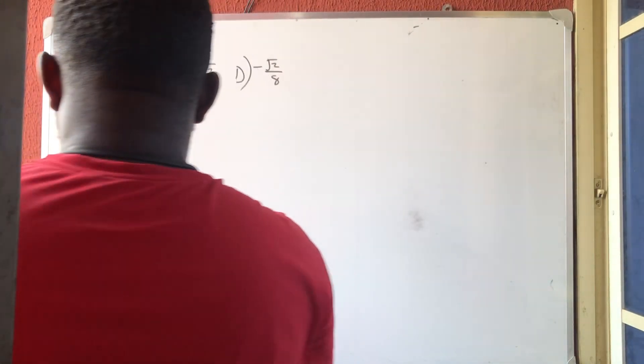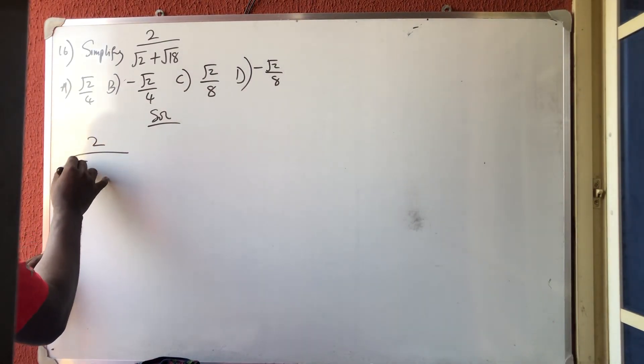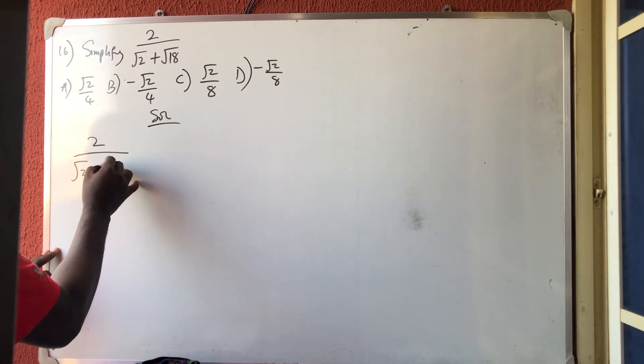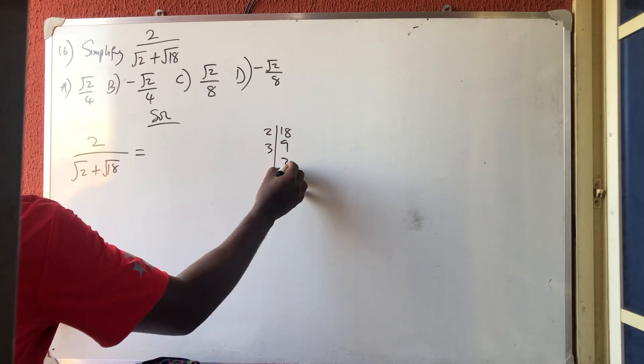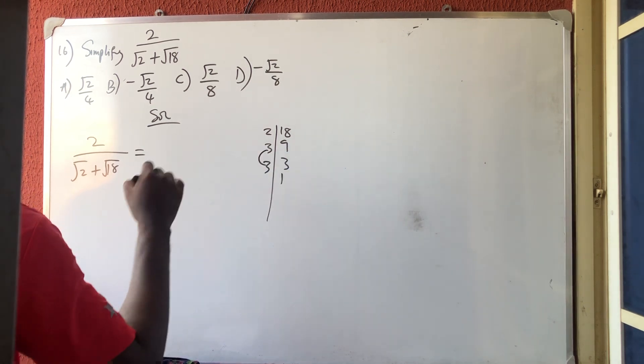Alright, let's solve this simple problem. We have 2 over root 2 plus root 18. Let me break 18 down: 2 divides 9, 3 divides 3, 3 divides 1. Anybody that is double stays outside.